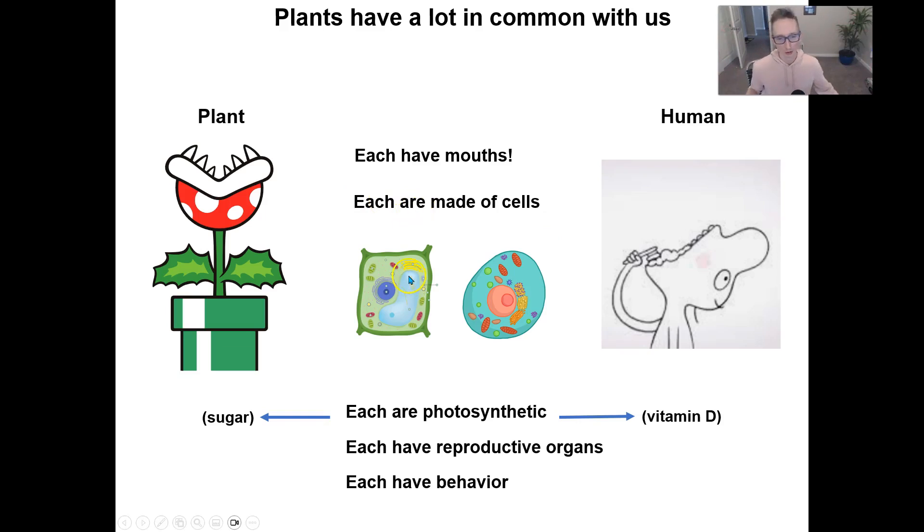We're both made out of cells. The list just keeps on growing. Plant cells are a little bit different - they got a vacuole and a cell wall and these little chloroplast things. But they got mitochondria just like we do, they got a nucleus just like we do, rough ER, smooth ER, Golgi apparatus, cytoskeleton, DNA, RNA, proteins - they got more in common with us than they got different.